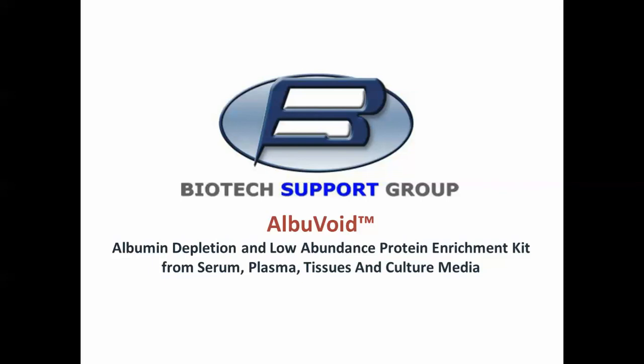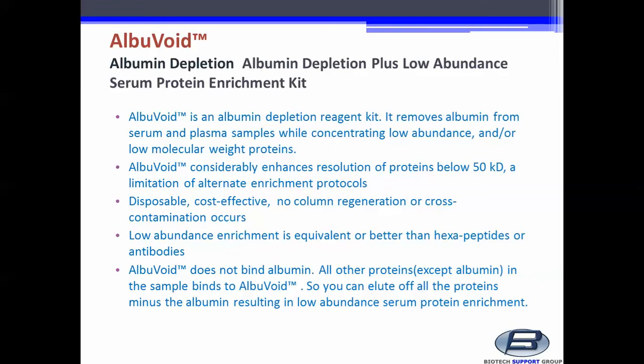Welcome to Biotech Support Group's Product Knowledge Series on Albuvoid – Albumin Depletion and Low Abundance Protein Enrichment Kit from Serum, Plasma, Tissues, and Cell Culture Media. Albuvoid is an albumin depletion reagent kit.